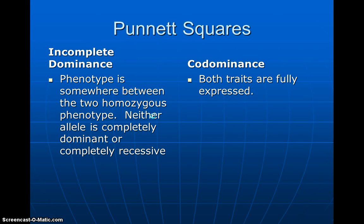So with Punnett squares, we have incomplete dominance and codominance. Incomplete dominance is when the phenotype is somewhere between the two homozygous phenotypes. Neither allele is completely dominant or completely recessive. That's really a lot of words. I'll give you an example here.